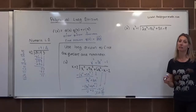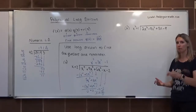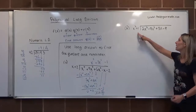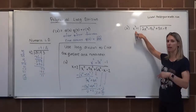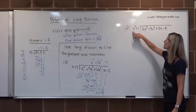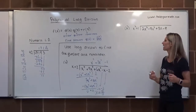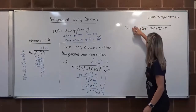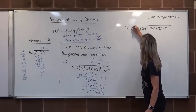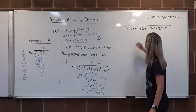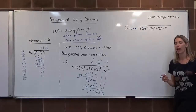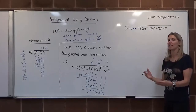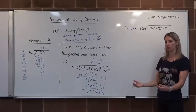If there is a missing term, we might want to put a 0 to represent that missing spot. The divisor x²+1 goes from x² to the constant, so we're missing an x term. It might be helpful to write it as x²+0x+1. Putting that 0x in there doesn't change the value of the divisor — it just creates a third term to make it a more traditional trinomial.